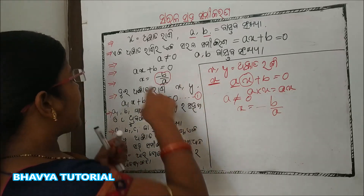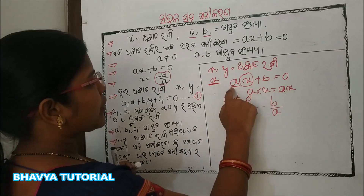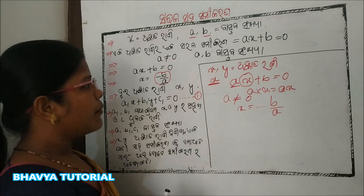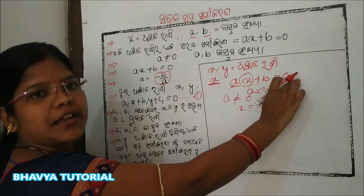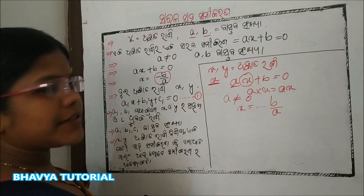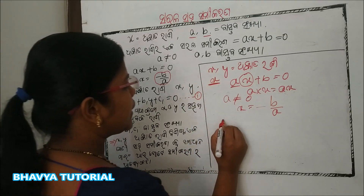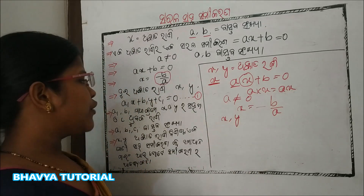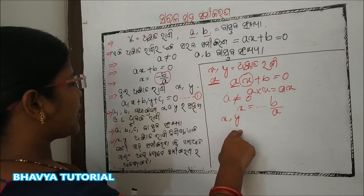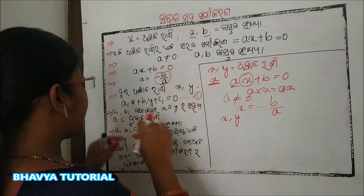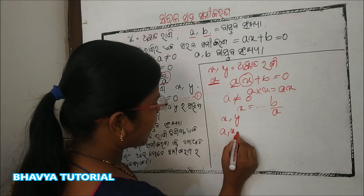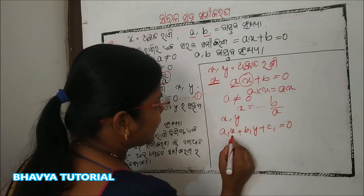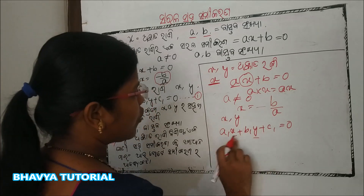We need to move on — a x plus b equal to 0. Now, a1 x plus b1 y plus c1 equal to 0, and x y plus c1 equal to 0.